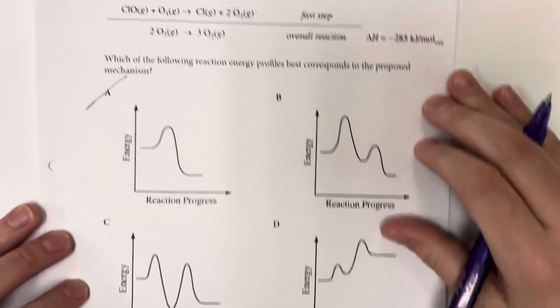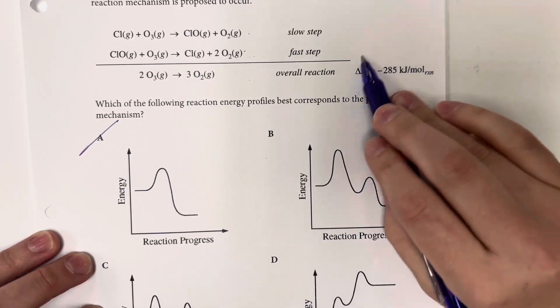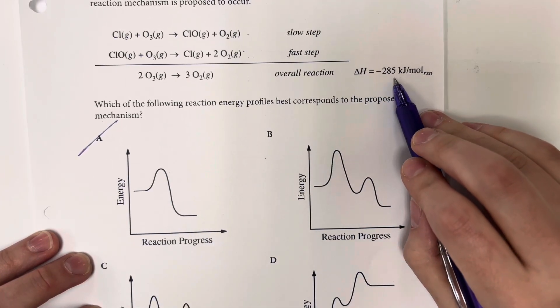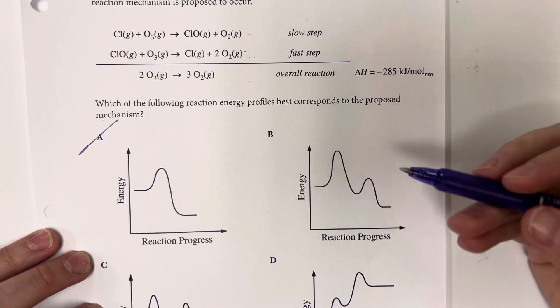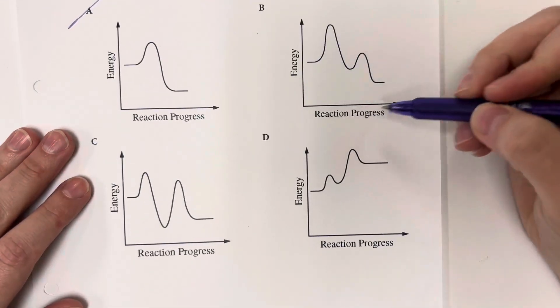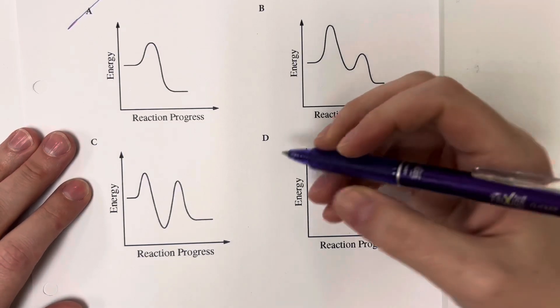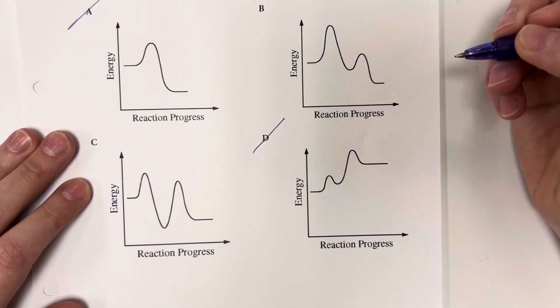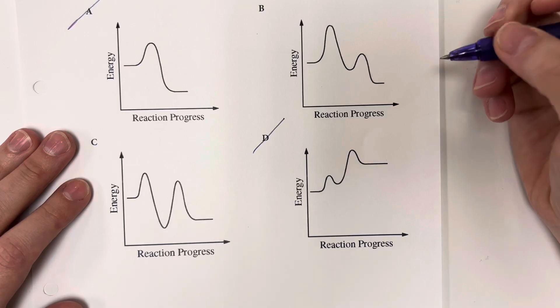And then I can see that my overall amount of energy is going to decrease. So that means that my starting energy should be higher than my final energy, so D can also be eliminated here.